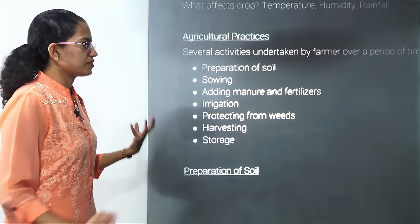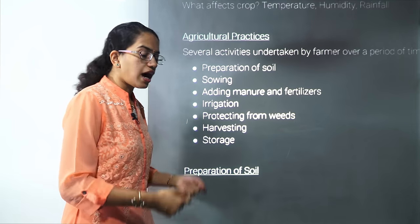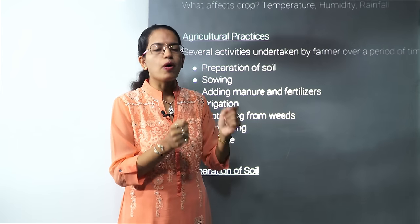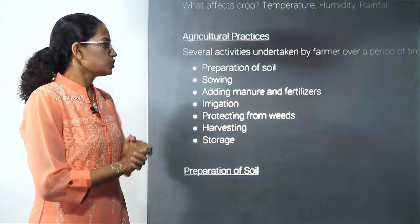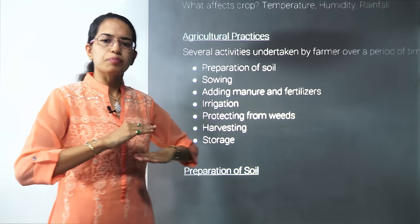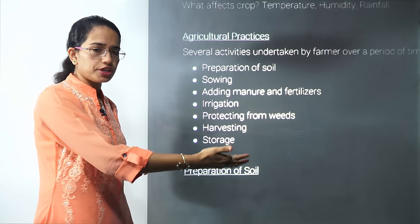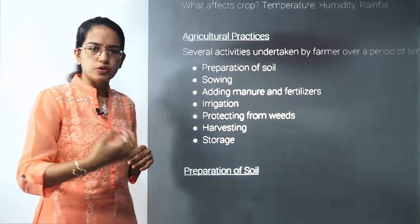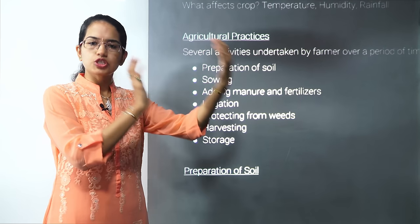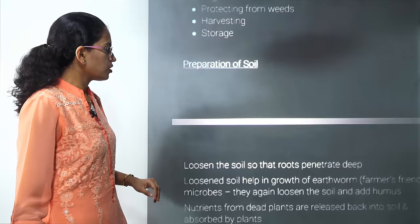Now let's look at the practice of agriculture. We'll start with the soil itself and move on ultimately to storage, after which you can consume the grain whenever required. The sequence is: prepare the soil, sow the seeds, add manures and fertilizers, provide water, remove unwanted plant growth, harvest the crop, and finally store it.